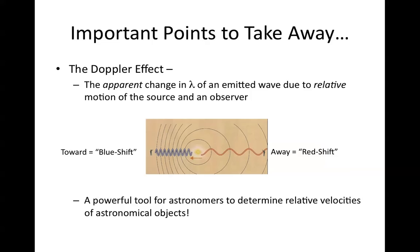So let's just go back and summarize. The Doppler effect is the apparent change in the wavelength of an emitted wave due to the relative motion of the source and an observer. So when you see it, when you receive that wave, it will be at a different wavelength slightly due to this motion. And this is a very powerful tool for measuring all kinds of kinematic effects in astronomical objects.